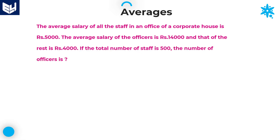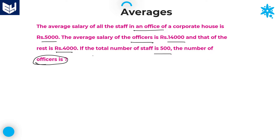Let's move on to the next question. The average salary of all the staff in an office of a corporate house is 5,000. The average salary of officers is 14,000 and that of the remaining people is 4,000. If the total number of staff members is 500, the question is: what is the number of officers?